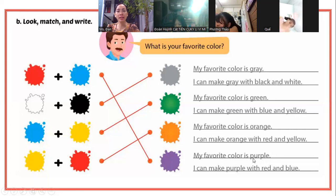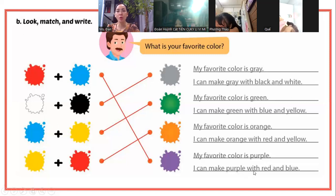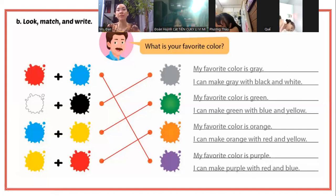My favorite color is purple. Màu yêu thích nhất của tôi là màu tím. I can make purple with red and blue. Tôi có thể tạo ra màu tím bằng màu đỏ và màu xanh dương. Tới đây các bạn hiểu bài chưa?